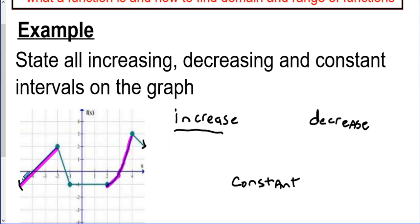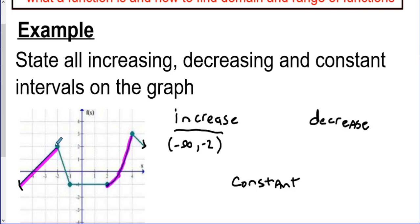To describe those two increasing sections using interval notation: the first section starts with an arrow on the left, meaning it continues forever to the left, so we write negative infinity. It keeps going uphill until it reaches an x-value of negative 2. I'll put round brackets on both sides — infinities never get square brackets, and I'm also not including negative 2 because that's the turning point, not where the graph is increasing. The endpoints are always in round brackets.